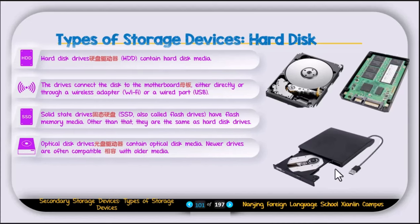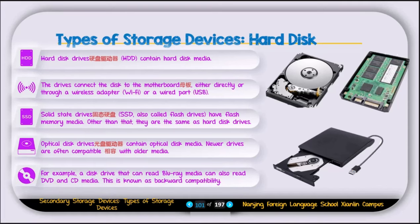The optical disk drive is used to read data from optical disks. Newer drives are often backward compatible with older media. For example, a Blu-ray drive can read data from Blu-ray disks, DVDs, and CDs, whereas a CD-ROM can only read CD data.